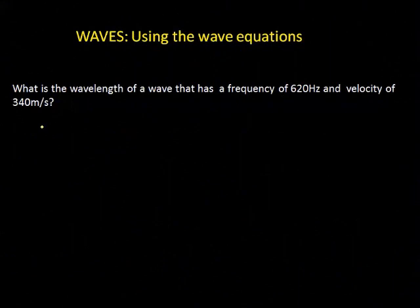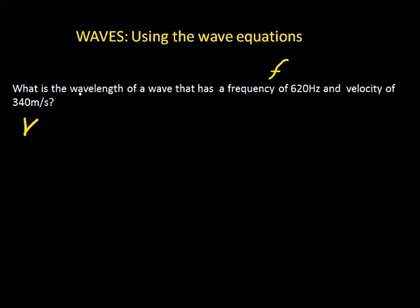Here's our next problem: what is the wavelength of a wave that has a frequency of 620 hertz and a velocity of 340 meters per second? That's approximately the speed of sound. We're given f the frequency and v the velocity, and we're looking for the wavelength lambda. We need an equation that says lambda equals something, so we start with velocity equals frequency times wavelength.